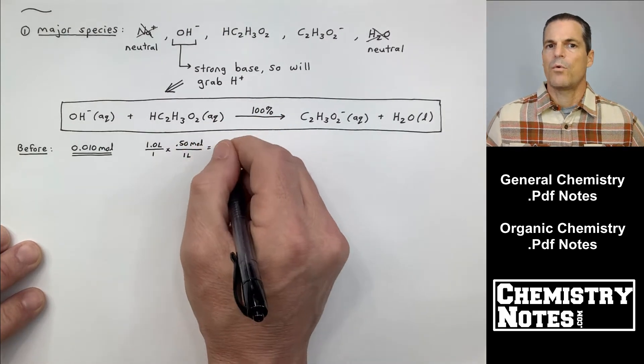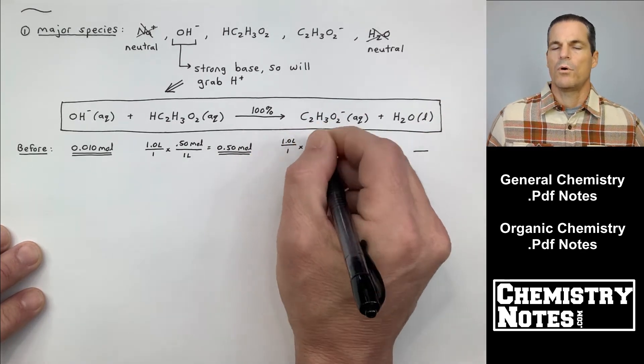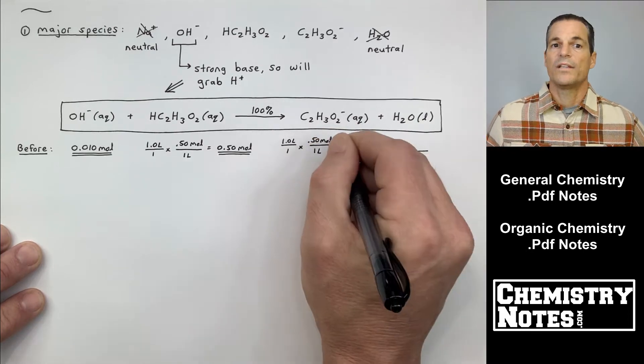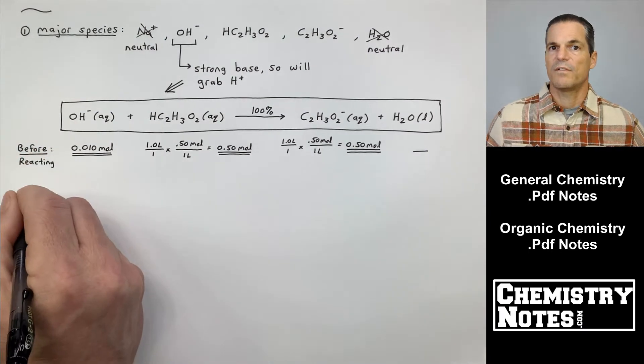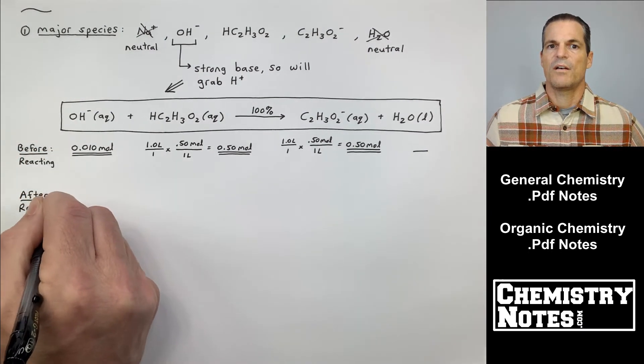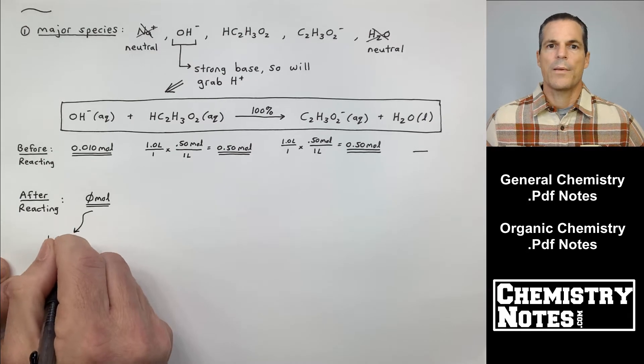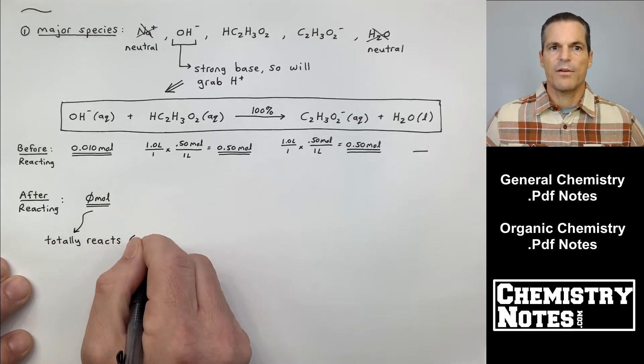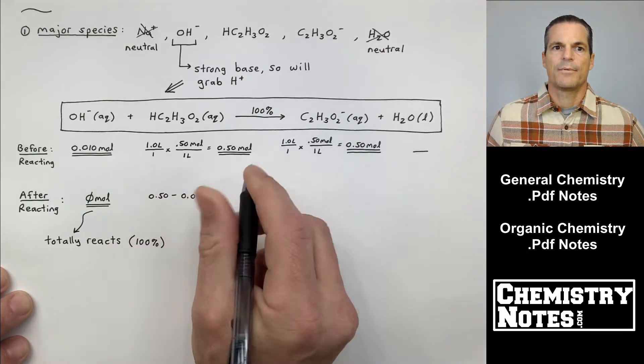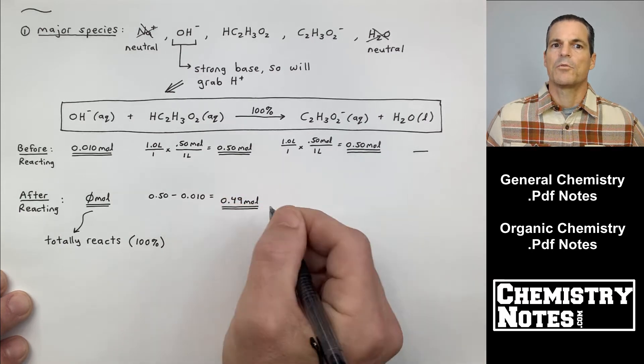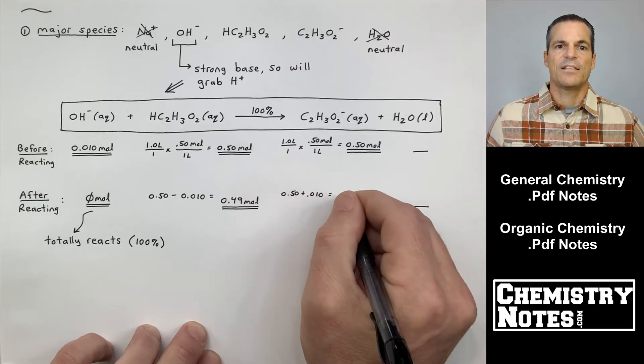Not OH-, so we have a weaker base around. So before any reaction occurs, we know we have 0.010 moles of OH-, we have 1 liter times the molarity of acetic acid, or 0.50 moles of acetic acid. In a 1 liter solution of acetate, acetate being 0.50 molar, we have 0.50 moles. Water we'll ignore. After reacting, the very strong base, OH-, we have 0 moles of it now because it totally reacted 100%.